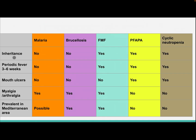Differentiation: In malaria, there will be myalgia, arthralgia, and possible prevalence in the Mediterranean area. Brucellosis also presents with myalgia and arthralgia with association to the Mediterranean area.